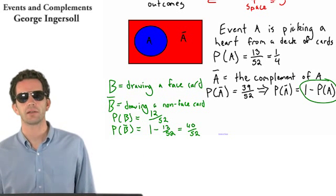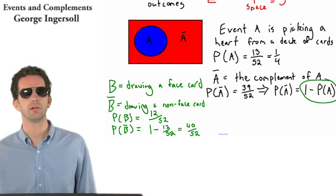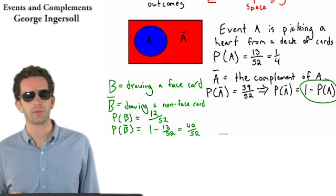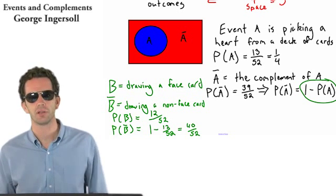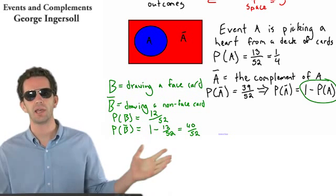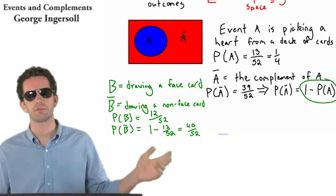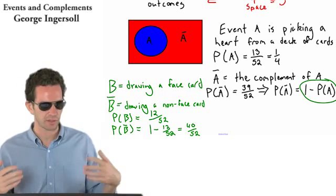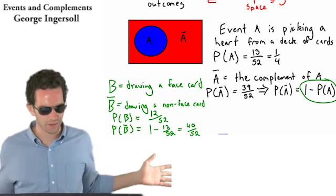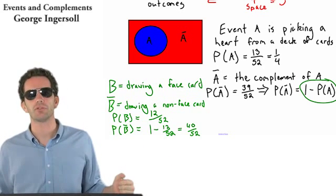There are 12 face cards in the deck out of 52 cards total. That means there must be 40 other cards. The ace through 10, that's 10 cards times 4, 40 other cards in the deck. So the complement of B, meaning any other card in the deck, is going to be equal to 40 over 52.